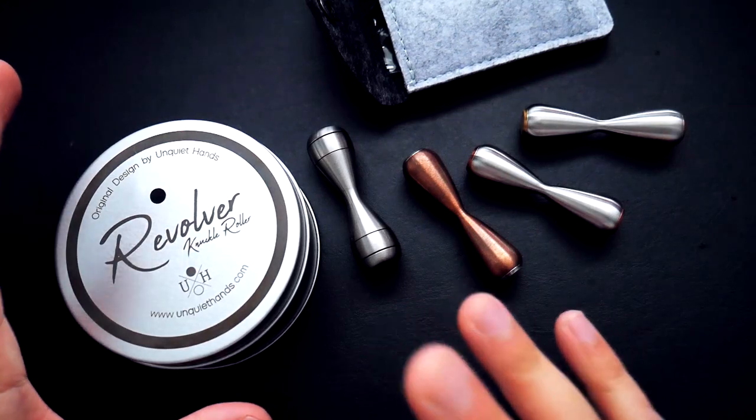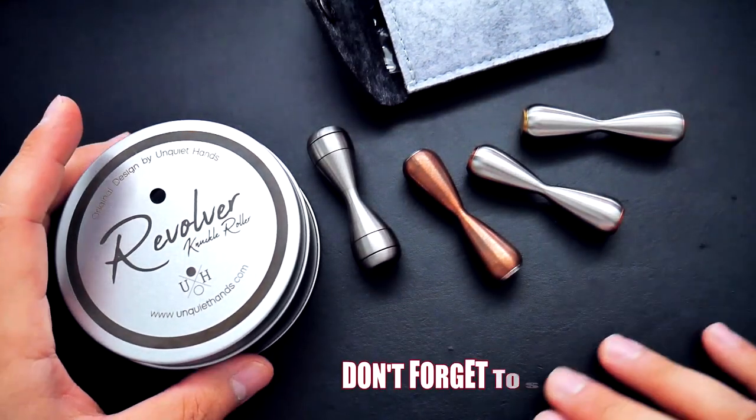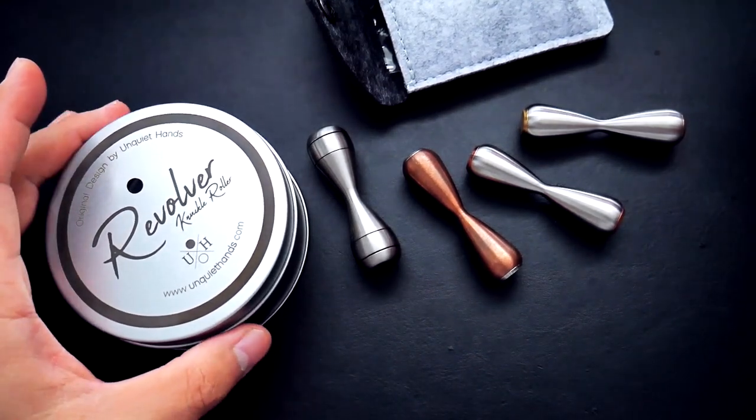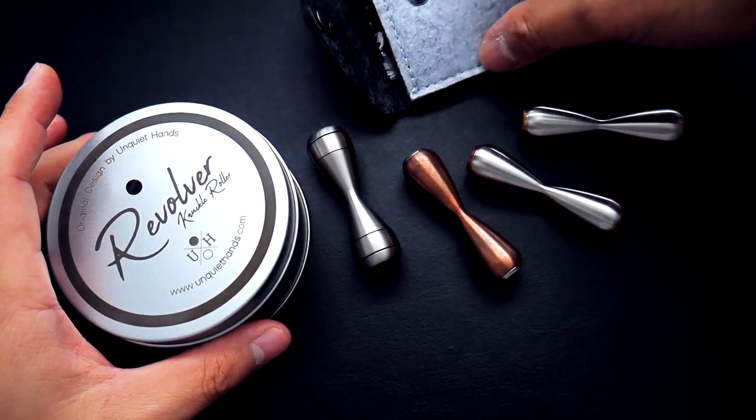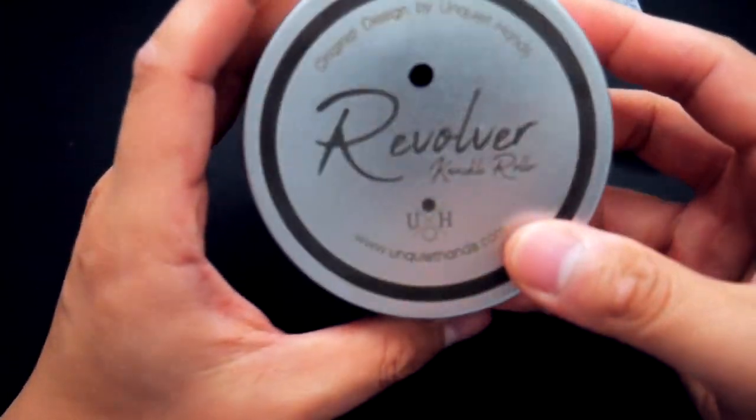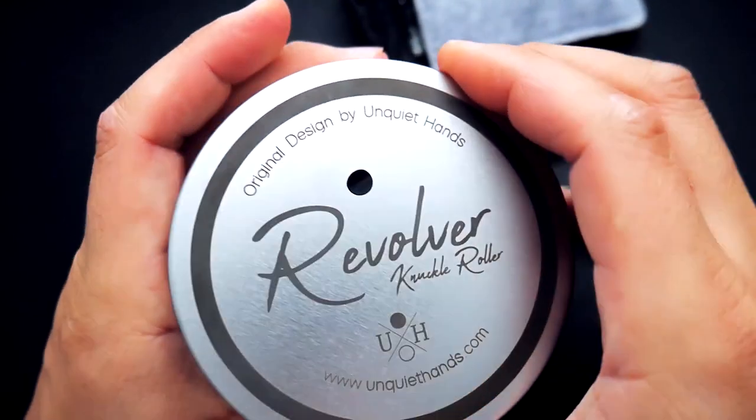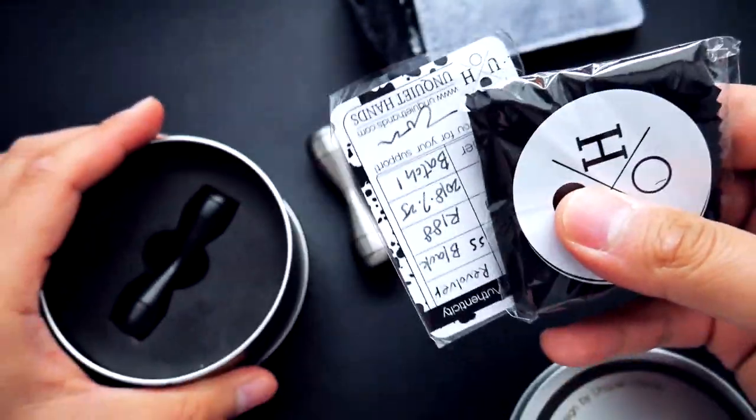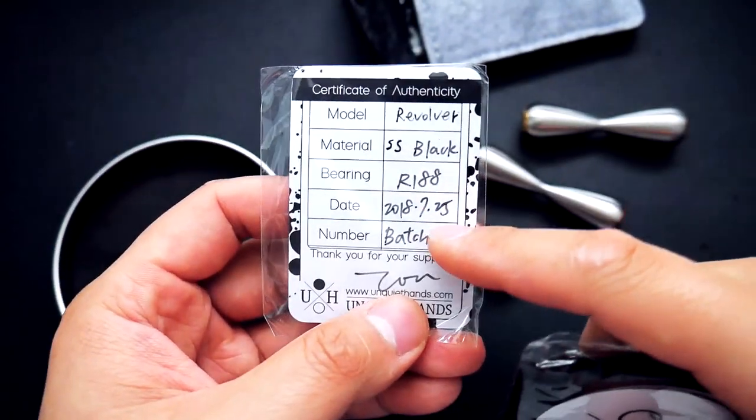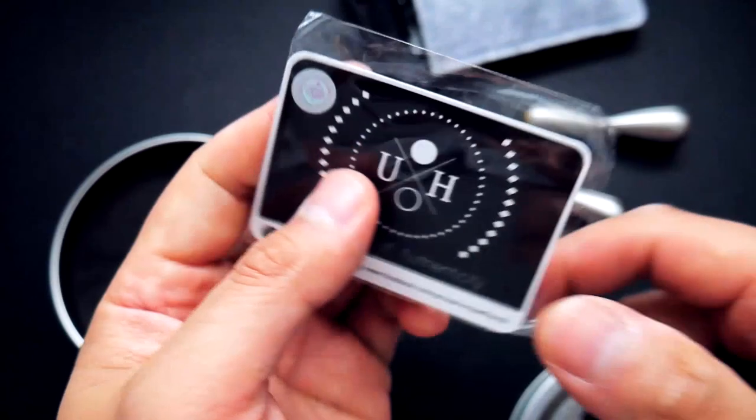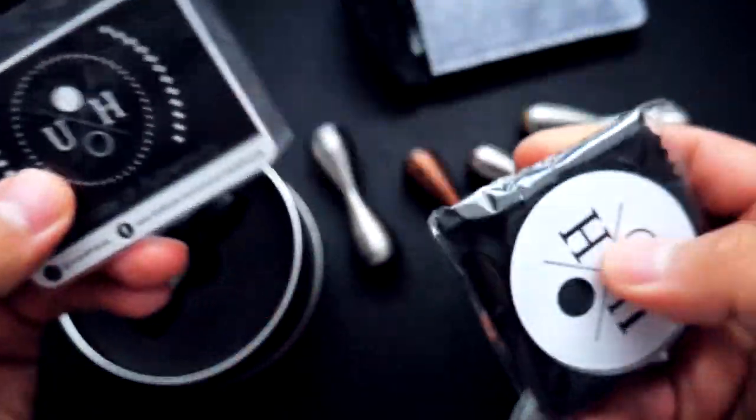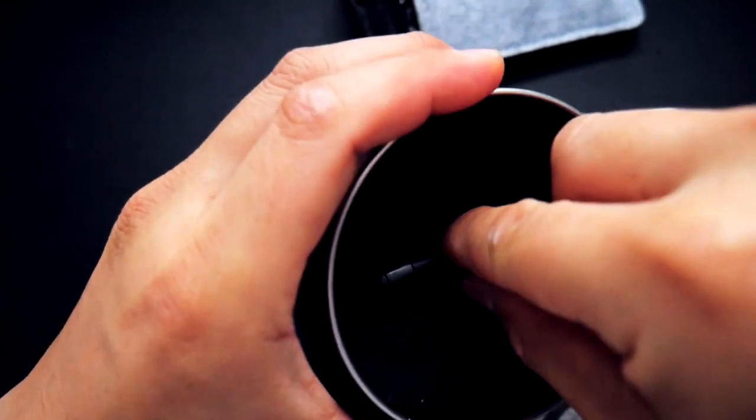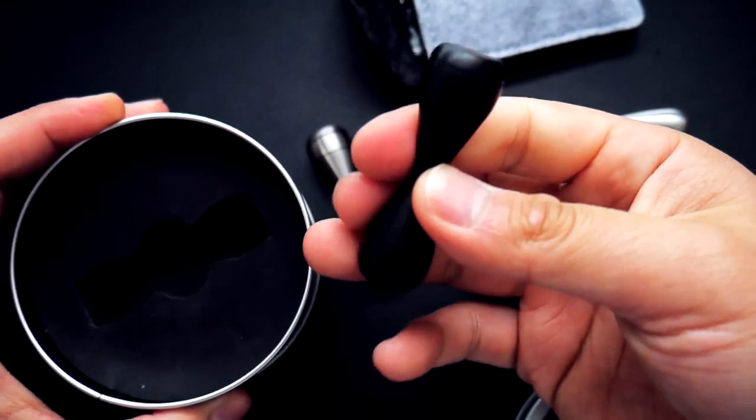Before we get into the actual review, I need to start by talking about the packaging because from start to finish I've been nothing but impressed with Tom's products. Huge shout out to Tom from Unquiet Hands who approached me and sent these for me to check out. This is the Revolver knuckle roller, the stainless one. You can see the color denoted by the little black dot. It comes in a nice tin with a card that tells you the materials and when it was made. All the social media on the back, even a hologram sticker, plus stickers and a cleaning cloth. It comes in a nice foam insert with your knuckle roller inside.